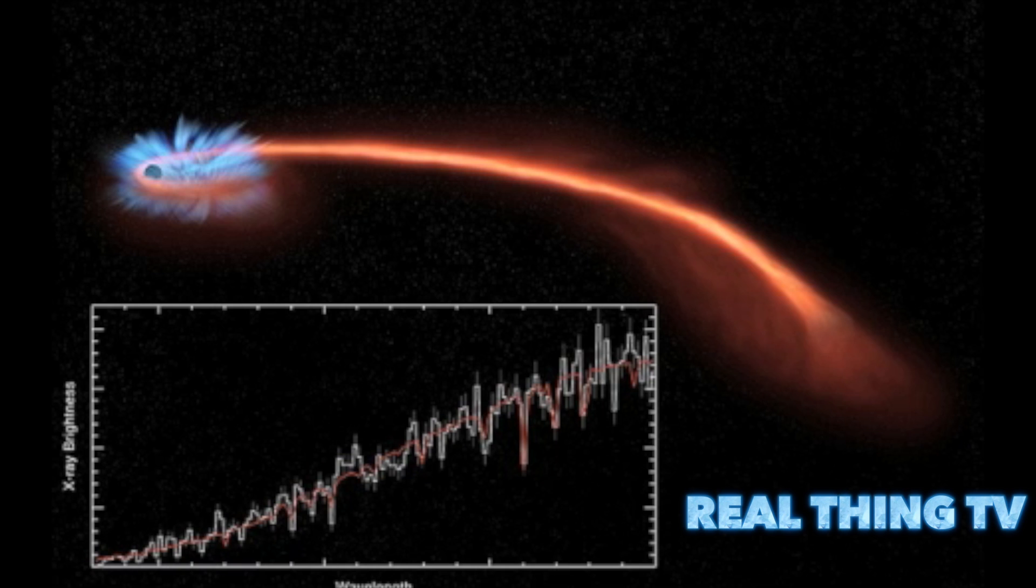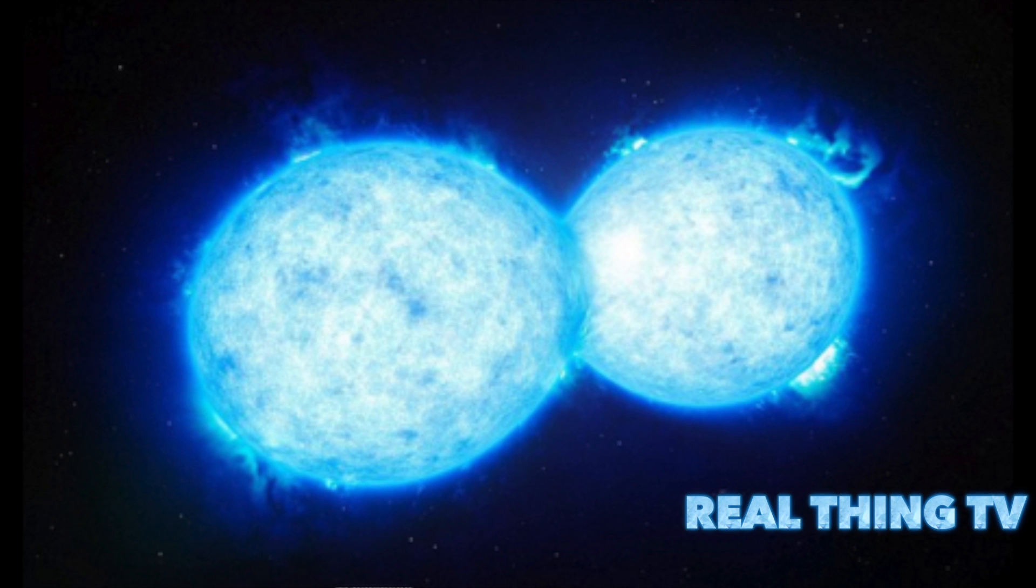Black hole caught shredding a star. Tidal disruption spotted in galaxy just 290 million light-years away. As star comes close to black hole, gravity causes tidal forces that rip star.